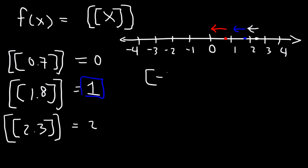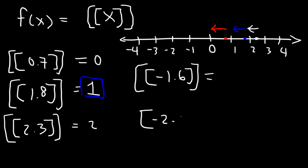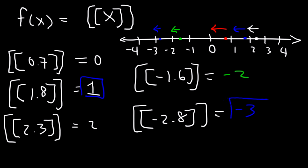Now let's move on to negative values. What is the greatest integer of negative 1.6? And also negative 2.8. If we plot negative 1.6, it is between negative 1 and negative 2. Pick the next integer to the left: negative 2. Negative 1.6 is not greater than negative 1, but it is greater than negative 2. For negative 2.8, it's between negative 2 and negative 3, so the answer is negative 3.